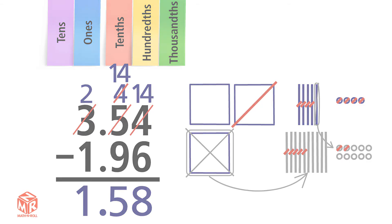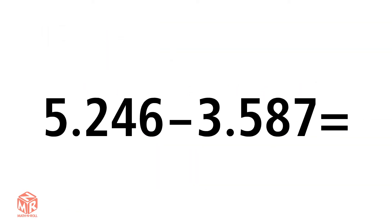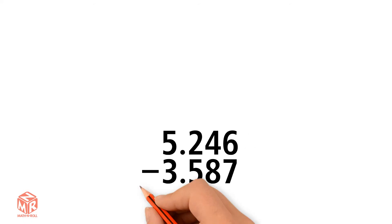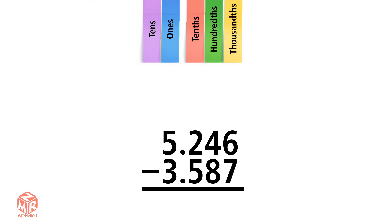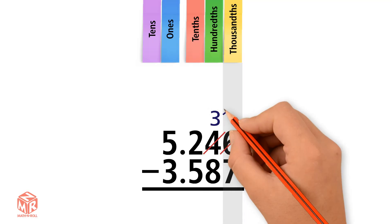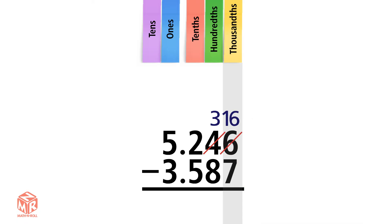Now let's do another example without modeling: 5 and 246 thousandths minus 3 and 587 thousandths. We start by lining up the decimal points. We start subtracting from right to left, so we start with the thousandths. Are there enough thousandths to subtract 7 from 6? No, so we regroup. We're left with 3 hundredths and 16 thousandths. Now subtract the thousandths: 16 minus 7 equals 9.